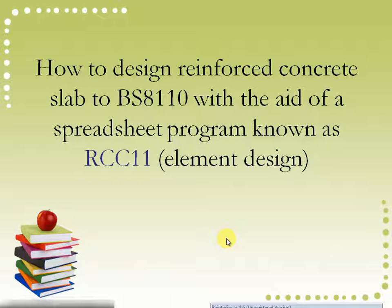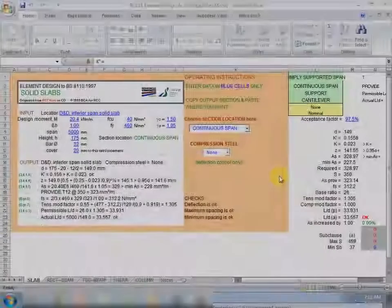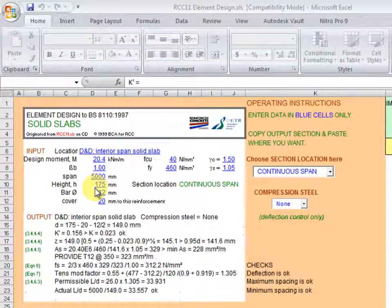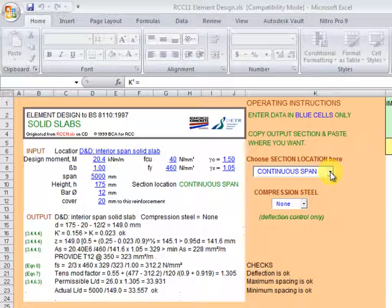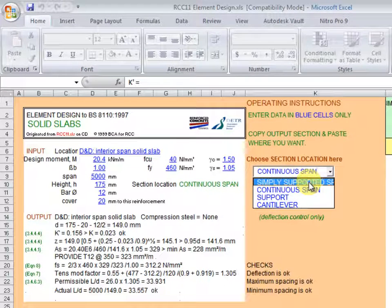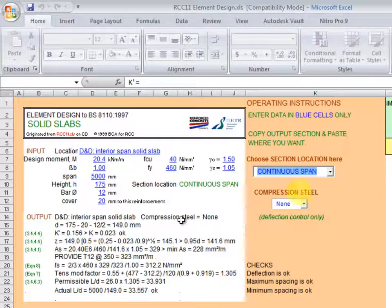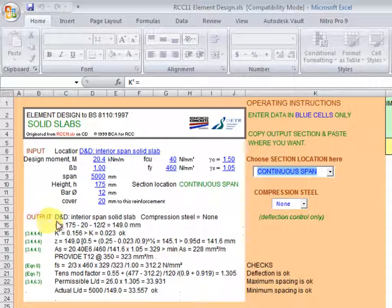A download link to the spreadsheet program is provided in the video's description. Here is the spreadsheet program. The bold colored cells are for input of parameters. We can change the type of span, whether it is simply supported or continuous.